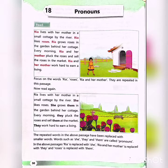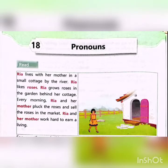Now, look at the passage carefully and read after me. Ria lives with her mother in a small cottage by the river. Ria likes roses. Ria grows roses in the garden behind her cottage. Every morning, Ria and her mother pluck the roses and sell the roses in the market. Ria and her mother work hard to earn a living.